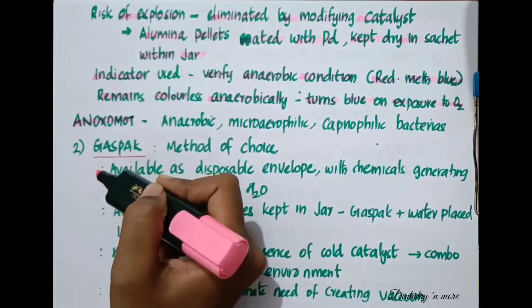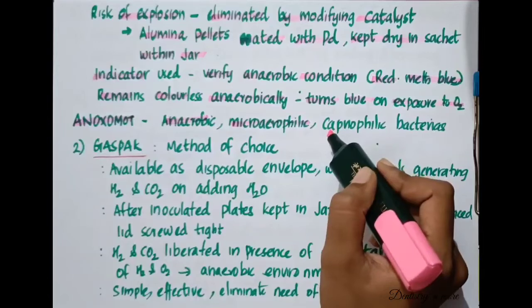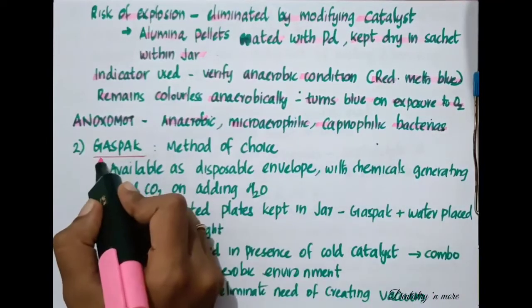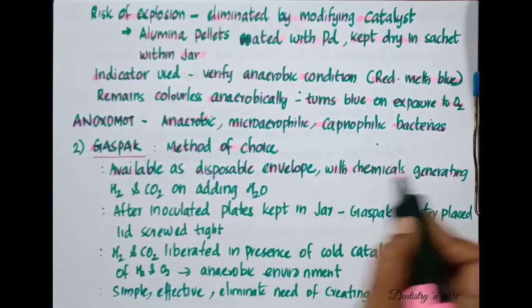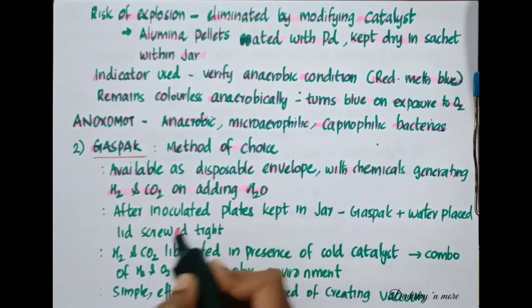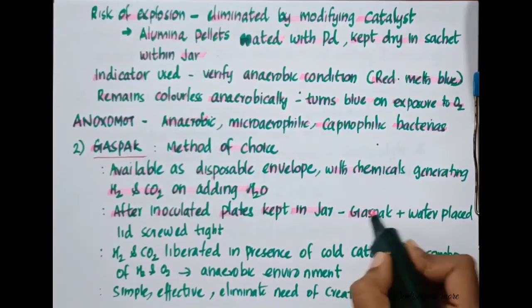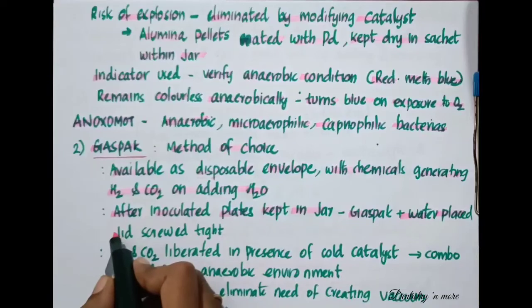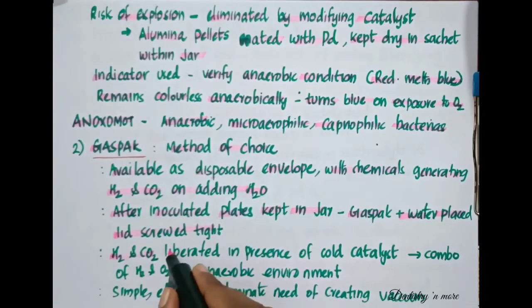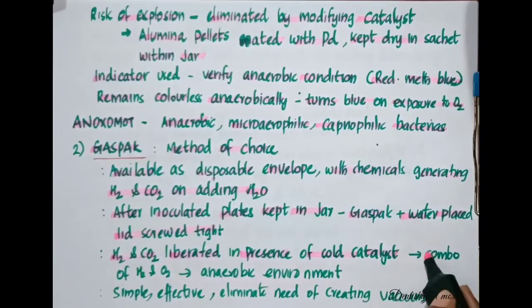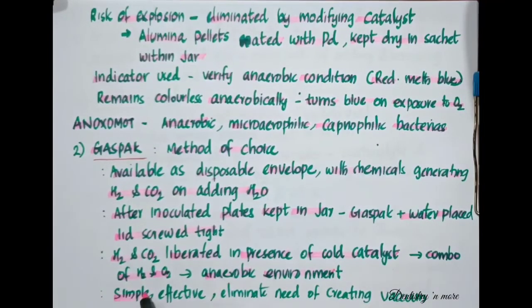Anoxomat is an automated microprocessor-controlled system for the cultivation of anaerobic, micro-aerophilic, and capnophilic bacteria. The next anaerobic culture method is Gas Pack, which is the method of choice. It is available as a disposable envelope with chemicals generating hydrogen and carbon dioxide on adding water. After the inoculated plates are kept in the jar, the Gas Pack is mixed with water and the lid is screwed tight. Hydrogen and carbon dioxide liberate in the presence of a cold catalyst, aiding combination of hydrogen and oxygen, creating a complete anaerobic environment. This method is simple, effective, and eliminates the need for creating a vacuum.